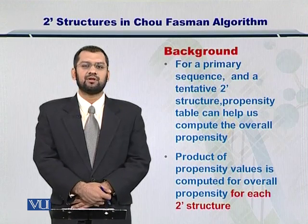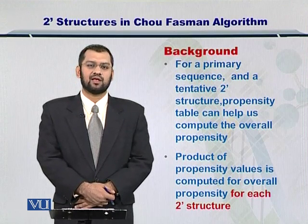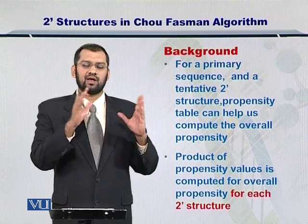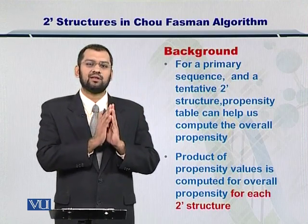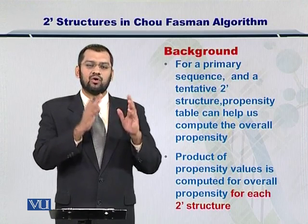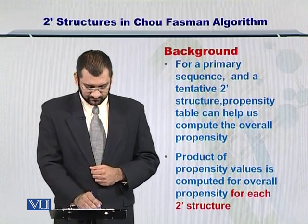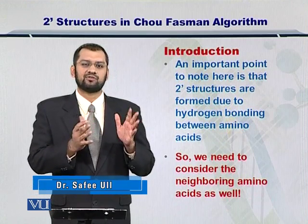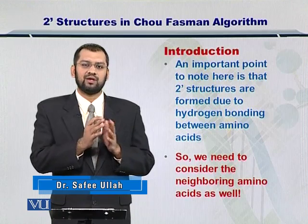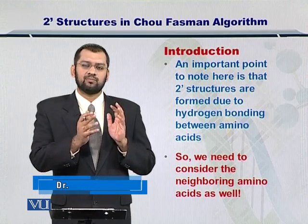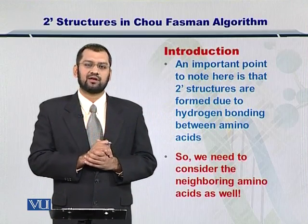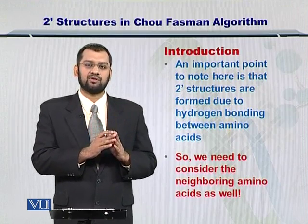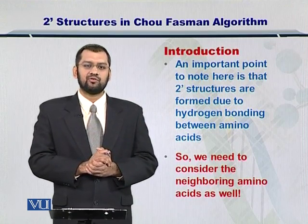There are several tentative secondary structures that can be formed, and you can use the propensity of each amino acid for a specific secondary structure. You can have a product of such propensities and arrive at an evaluation of an overall secondary structure. It is important to note that secondary structures in proteins are formed as a result of hydrogen bonding between various amino acids. If multiple neighbors are involved in the formation of these secondary structures, it is important to consider not just the propensity of one amino acid, but also of its neighborhood. This is very important.